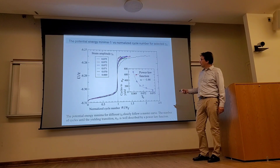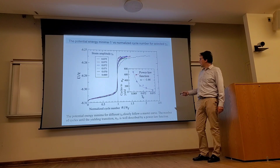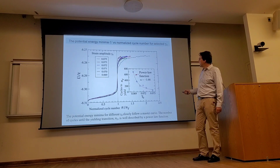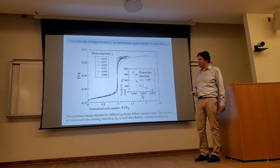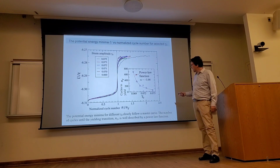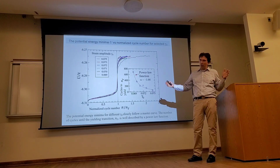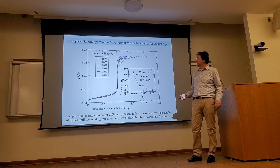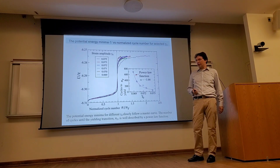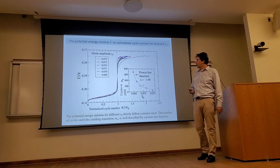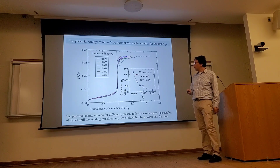In the inset, we plot the number of cycles until the yielding transition versus strain amplitude and realize that the data can be well described by a power law, which implies that upon further reducing the strain amplitude, the number of cycles until the yielding transition might significantly increase and possibly diverge for finite systems.